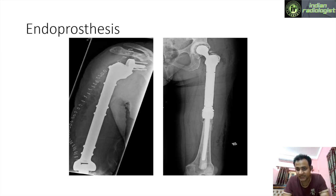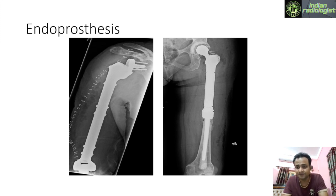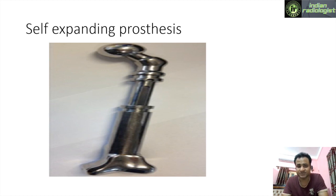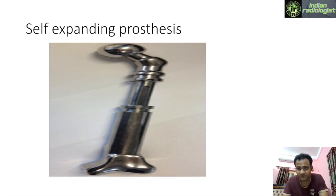Coming to the types of prosthesis — first, endoprosthesis. In this image there are two prostheses: one for the humerus (upper limb) and one for the femur (lower limb). Both are endoskeletal prostheses where the receptacle is placed within the residual part of the bone, the rest having been amputated, with an articulation present at the joint. Self-expanding prostheses work on the principle of self-expansion and are among the most common types used, helping in proper functioning of the limb after amputation.